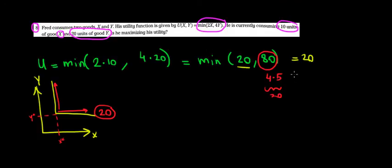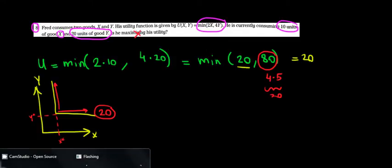So we're over consuming. We're over consuming 15 units of Y. We don't need them to increase our utility. We're just spending money on them. So no, we are not maximizing our utility. Hope this makes sense and we are done.